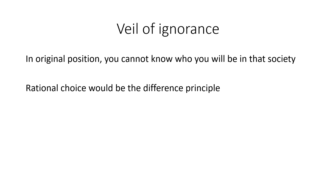The veil of ignorance is a rule within the original position: the catch is you cannot know who you're going to be in that society. When you decide how to divvy up the goods, you don't know what position you're going to be in. For example, if you set it up so there would be slaves and slave owners, you wouldn't know whether you'd be the slave owner or the slave. So you don't know what part of society you're going to be in. Rawls allows you to be completely selfish here — you can think purely in your own personal self-interest when deciding how to divvy up all the goods from behind this veil of ignorance.